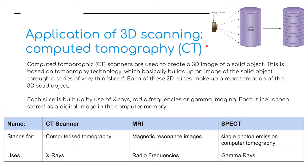The use of 3D scanners is widespread in hospitals, using a system called Computed Tomography, or CT. CT scanners create a 3D image of a solid object by building up an image through a series of thin slices. Each 2D slice makes up a representation of the 3D object, built up using x-rays, radio frequencies, or gamma imaging, and each slice is stored as a digital image in computer memory. We have three examples: the CT scanner uses x-rays; the MRI scanner — Magnetic Resonance Imaging — uses radio frequencies; and the SPECT scanner uses single photon emission computed tomography, basically gamma rays.